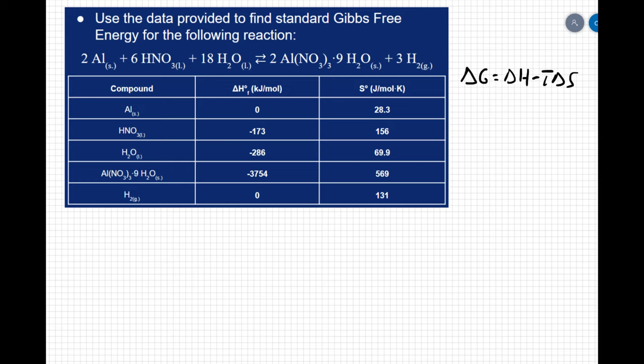Well the easiest one is the temperature because we are specifically told to find the standard Gibbs free energy. And if you look at your table you can see your delta H of formations are under standard conditions and your entropies are also under standard conditions.